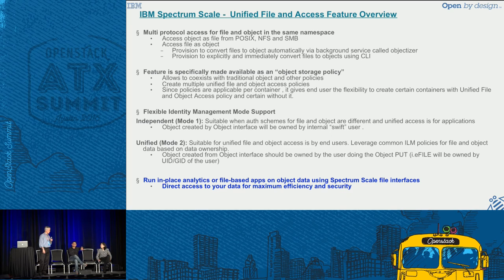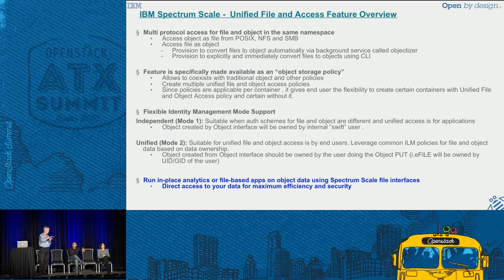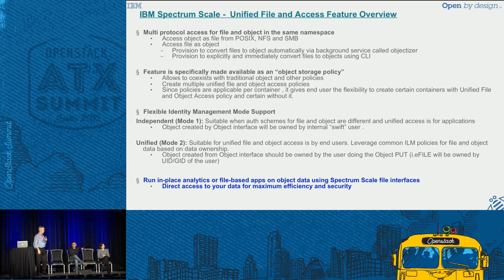Follow-up: So if somebody tries to make a directory at the top level, that won't show up as a container from the object interface? Answer: Exactly. One of the constraints is that we require you to create your containers from the object interface — once you've done that, you can populate them with data. Question: Do you support hierarchical directories? If I create several levels of directories, will they appear correctly in the container? Answer: Yes — the container name won't change, but the object name will have that directory path as part of the object name.